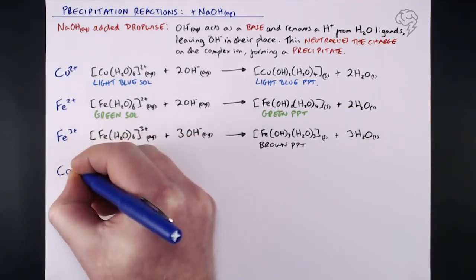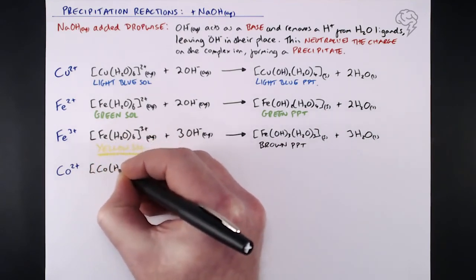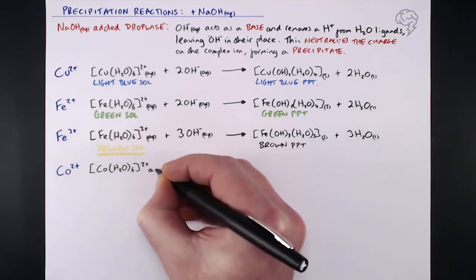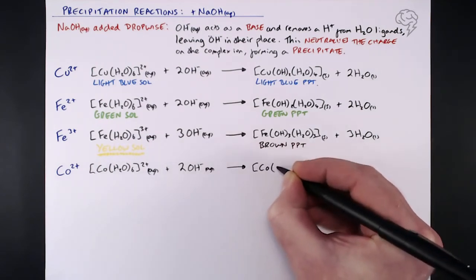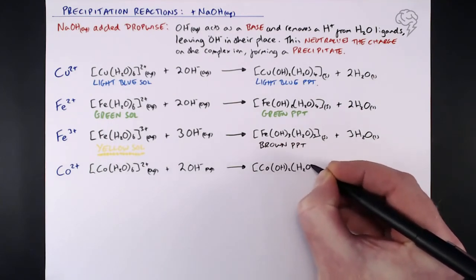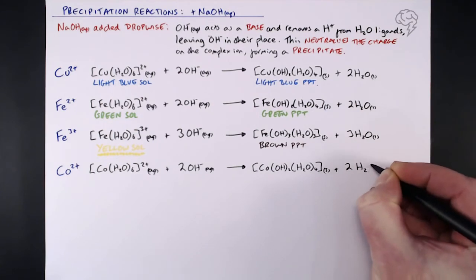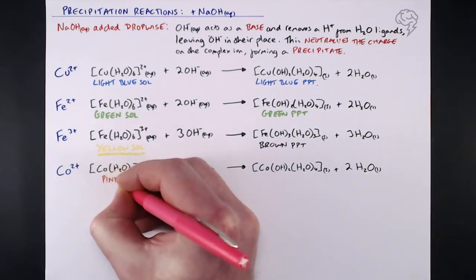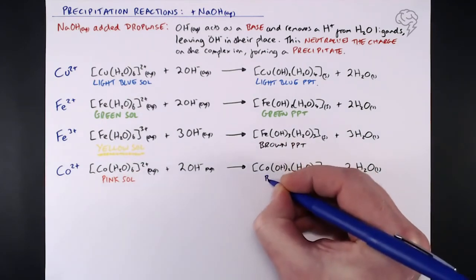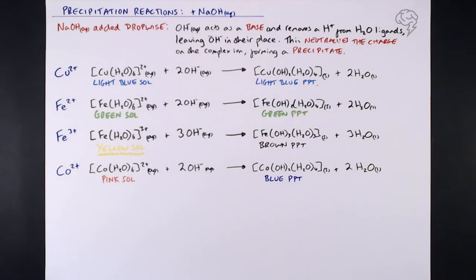The fourth one is cobalt. Starting with the cobalt hexa aqua 2+ complex ion, because it's 2+ it's only two OH⁻ that we're reacting with. So again, we get exactly the same complex as copper and iron 2+ — two H⁺ taken away, two OH⁻ cancelling out the 2+ charge, making two waters. Color change? Very distinctive one here. We start with a pink solution of Co²⁺ — that's classic — and we get a blue precipitate of [Co(OH)₂(H₂O)₄]. It's neutral, that's why it's solid. Make sure you are putting those state symbols in, because the difference between an aqueous complex ion and a solid complex ion is the difference between something in solution and something that's a precipitate.